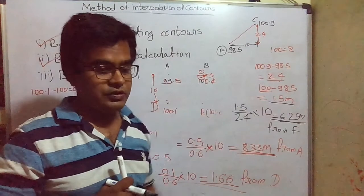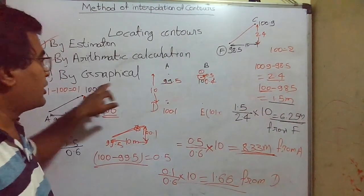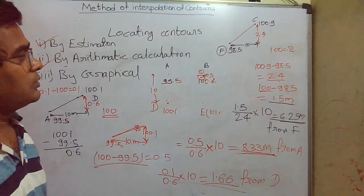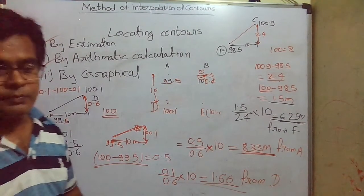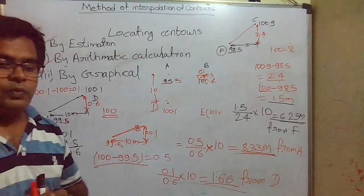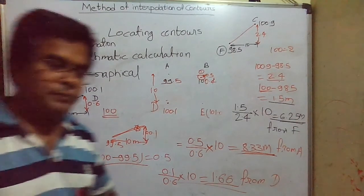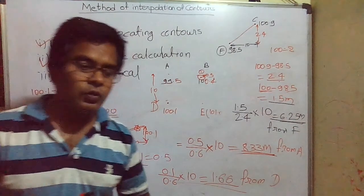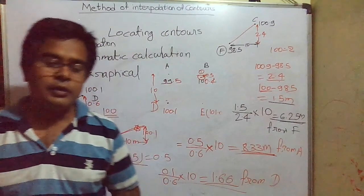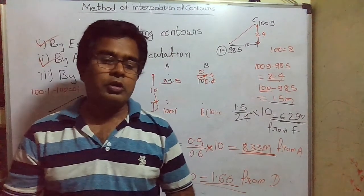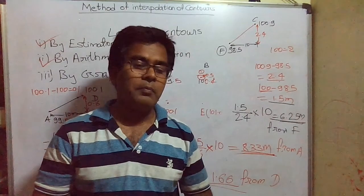We can generalize the formula: the distance from the point of lower RL equals the elevation difference needed divided by the total elevation difference between the two points, multiplied by the total distance. The next method is the graphical method, which is not in the current curriculum. So the method of interpolation of contours is complete. Let us now move to the next topic: contour gradient — what it is and how to plot a gradient contour using a level instrument and on a map.